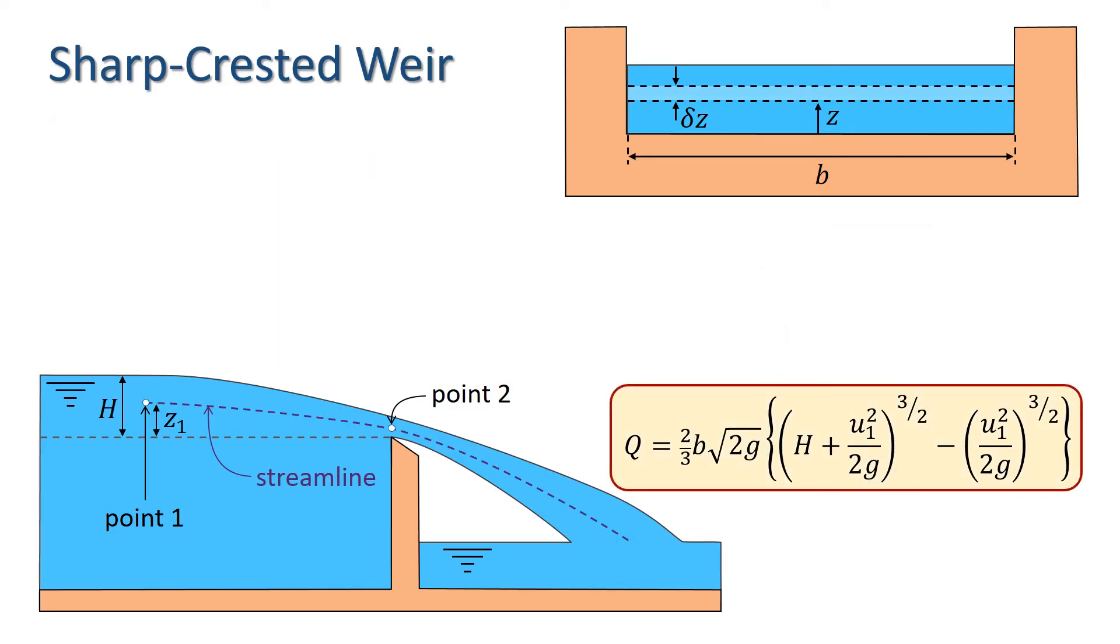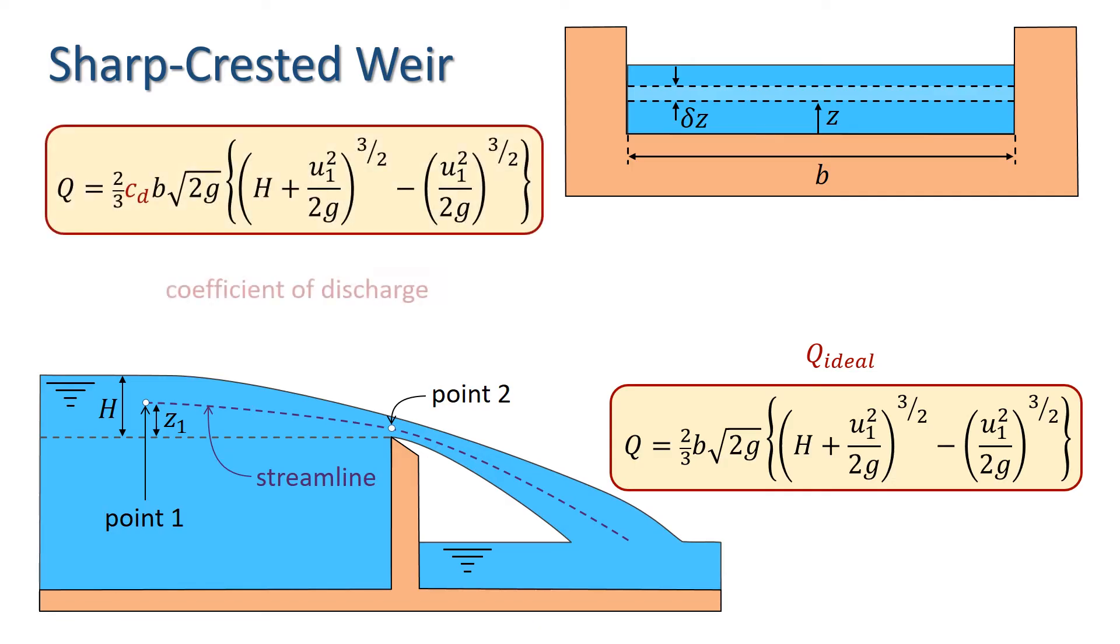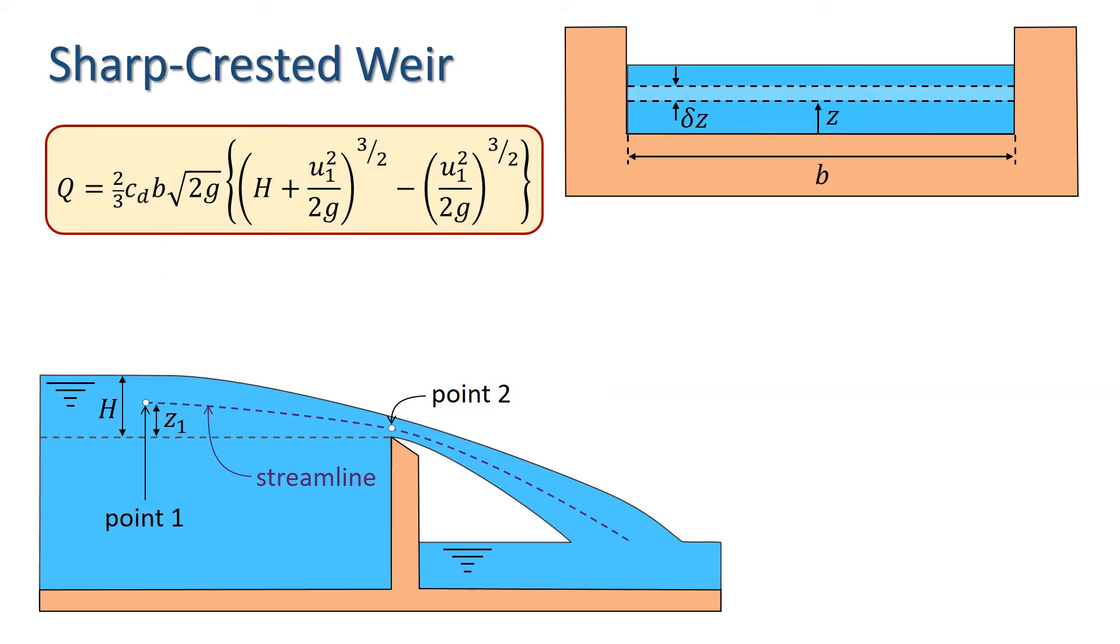This equation can be considered an ideal value of Q since we assumed no energy losses. In practice, there are frictional losses. We introduce a coefficient of discharge CD by which we multiply Q ideal in order to take account of the frictional losses. In the case where the upstream velocity is small, this simplifies to 2 thirds times CD times the width B times root 2G times H to the power of 3 over 2.